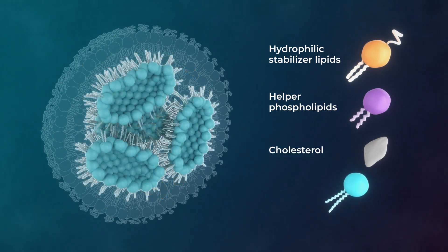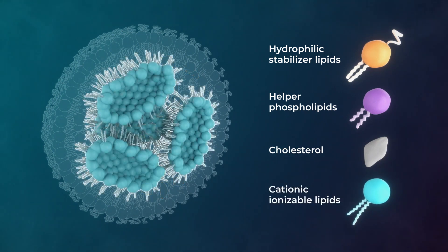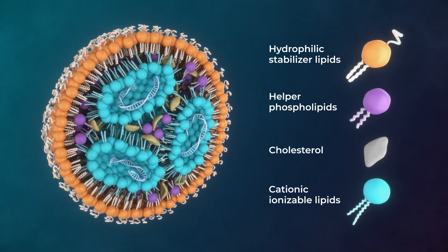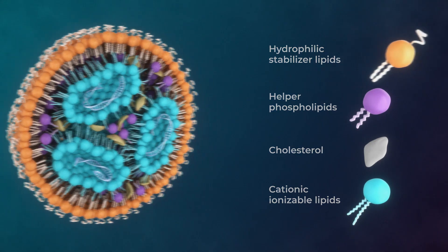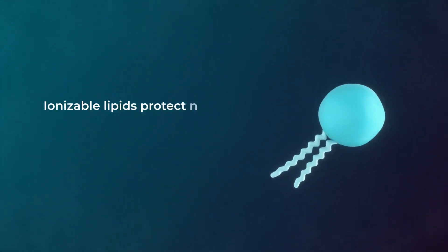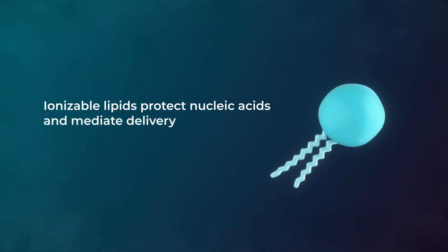Lastly, cationic ionizable lipids bind to the nucleic acid and shift charge with pH changes. Ionizable lipids are the most important excipient, as they play a significant role in protecting nucleic acids and facilitating their cytosolic transport.